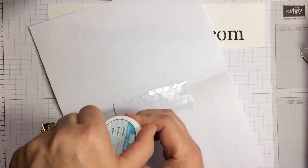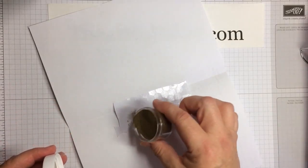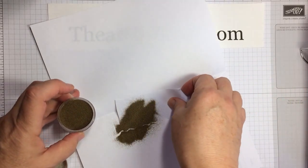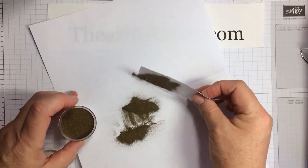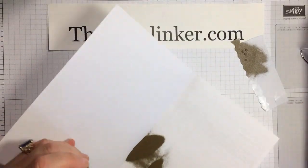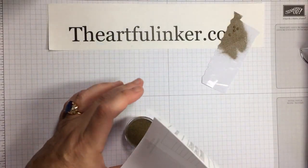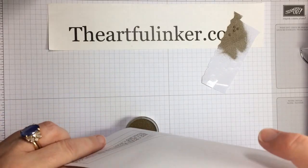I'll sprinkle on some gold embossing powder, and let's pick this up and shake it off. Of course, we need to put this back in. If I don't do this now, I'm famous for blowing this all over the place.